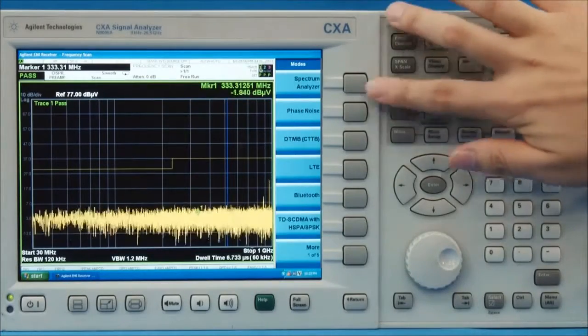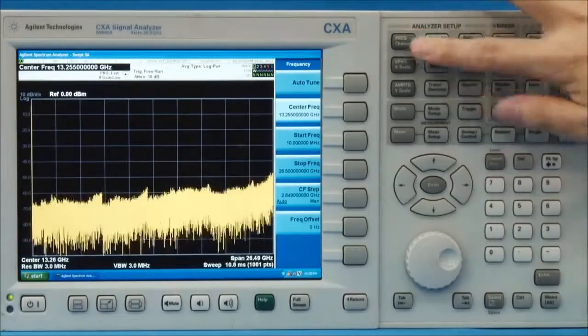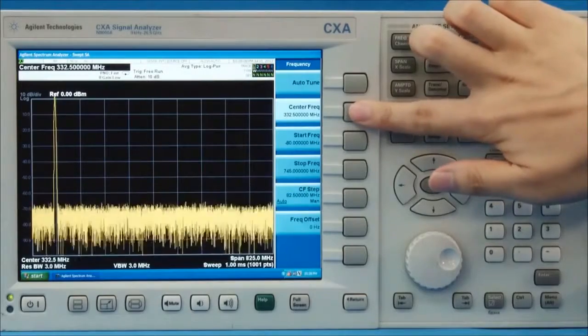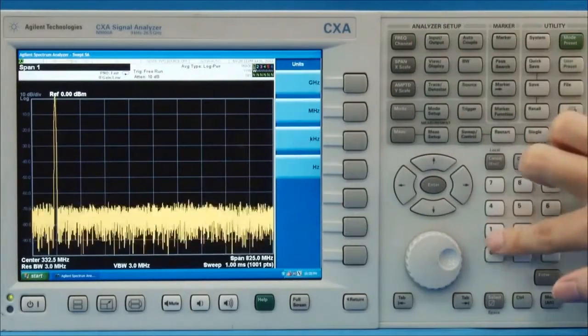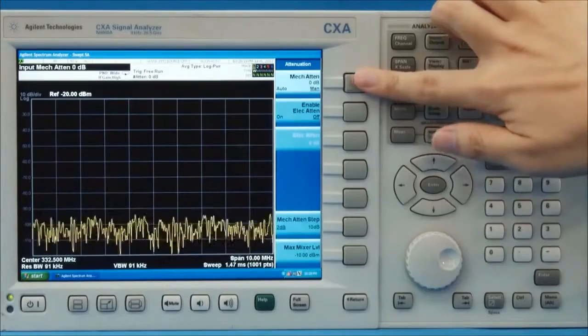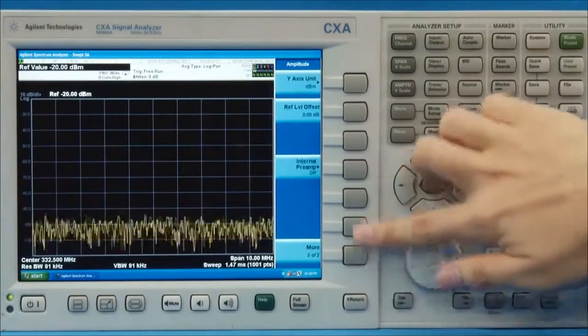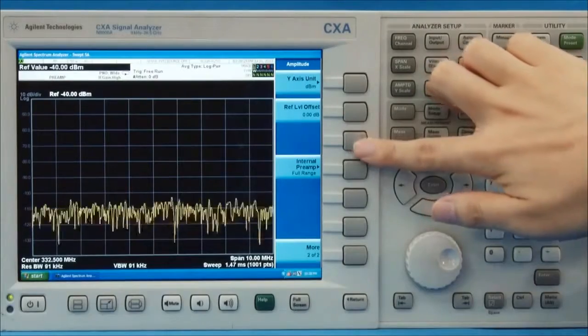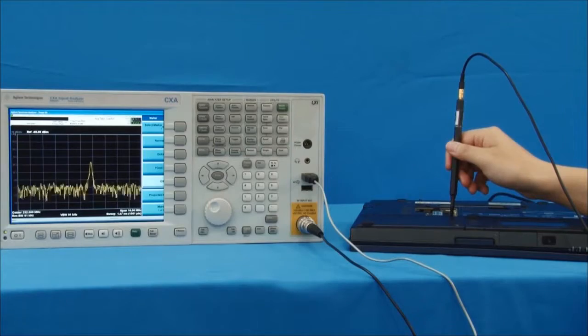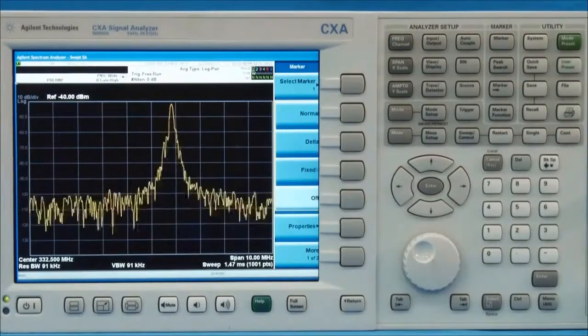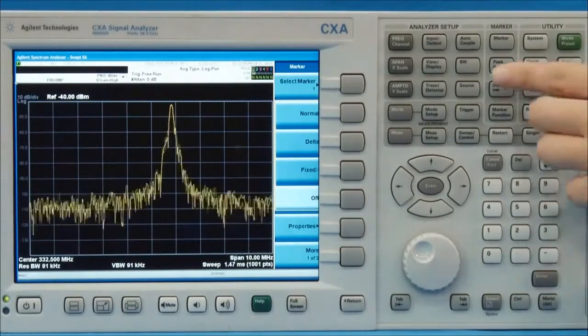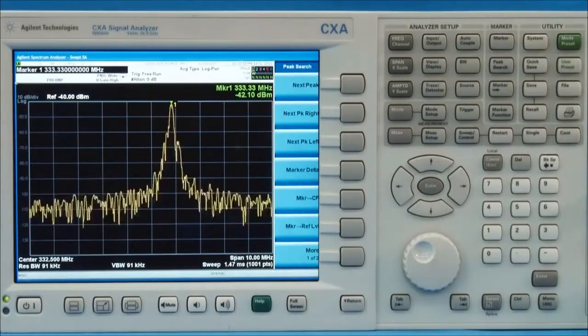We can switch to the spectrum analysis mode to check the signal in depth, set the center frequency, span and amplitude, and set the attenuation and pre-amplifier. This allows us to observe the signal better. It looks like a broadband digital signal with center frequency around 333 MHz. We know that it's the clock frequency of DDR333 SD-RAM.